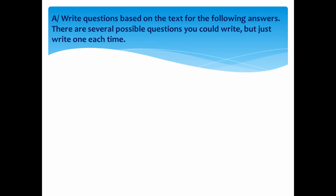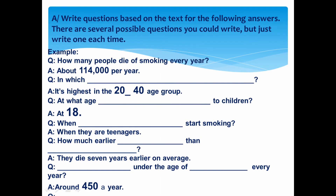In Exercise A, you have to write questions based on the text for the following answers. There are several possible questions you could write, but just write one each time. إذا كان الجواب 'about 114,000 per year'، السؤال: How many people die of smoking every year? إذا كان الجواب 'is highest in the 20-24 age group'، السؤال: In which age group is smoking highest?